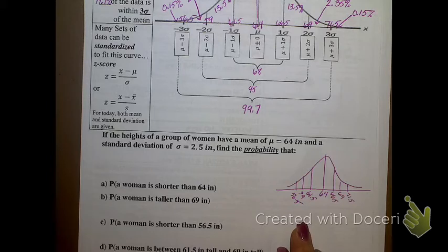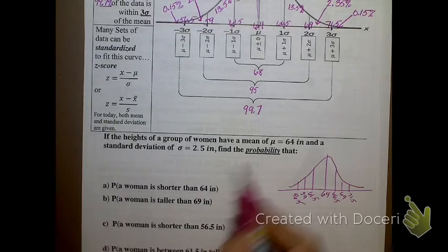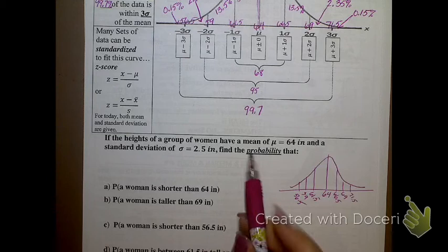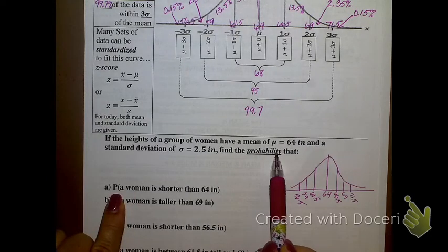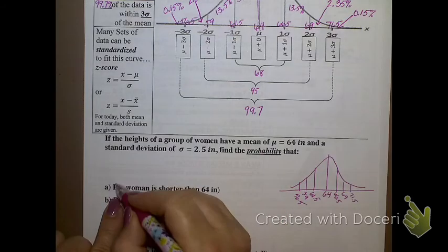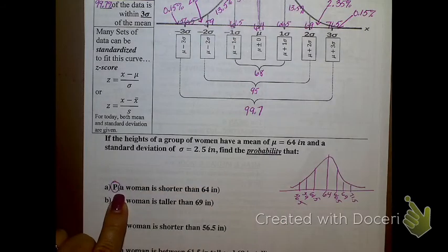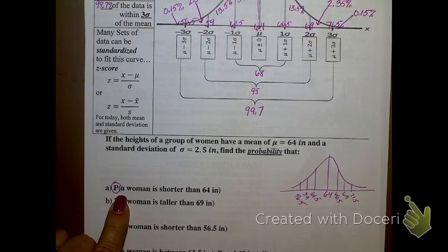We're almost, you almost read this the same way you read the histogram that was on yesterday's test. You almost read it the same way. So, what the normal curve is, is it tells us a probability. So, when we have probability, we use this P thing. So, this part right here, part A, says find the probability that a woman is shorter than 64 inches.